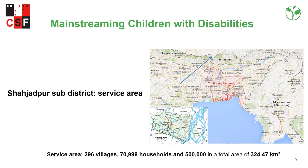A map showing the service area of the mainstreaming program for children with disabilities. The service area covers half a million population in Shahjadpur sub-district in Bangladesh.